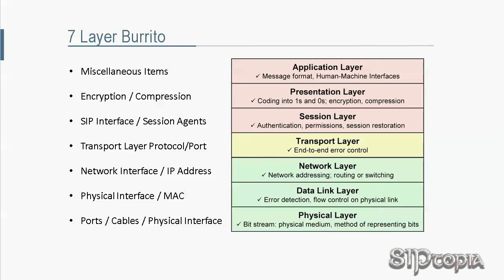Let's say we all agree that 90% of the lines in an SBC configuration are left with default values. Where do we start? What order should we follow? With small exceptions, the configuration flow actually behaves according to the 7-layer OSI model. Keeping this in mind will help us remember the order we should follow.